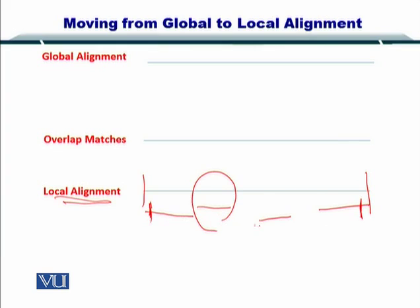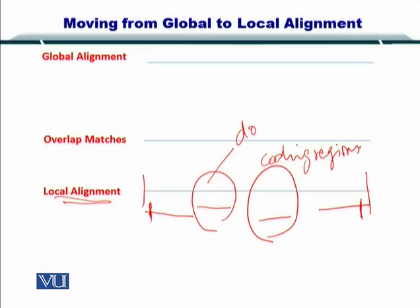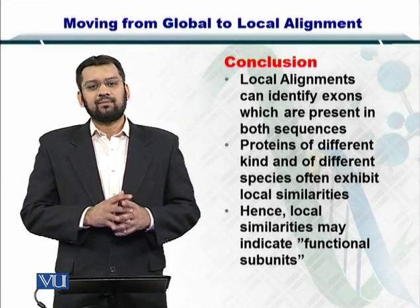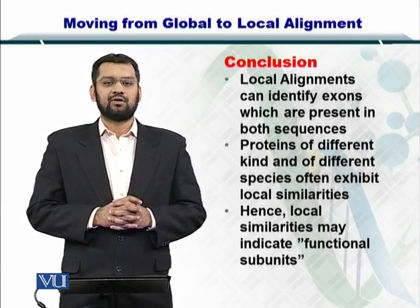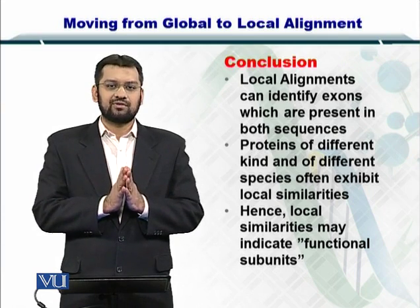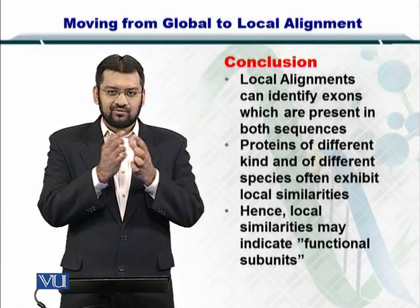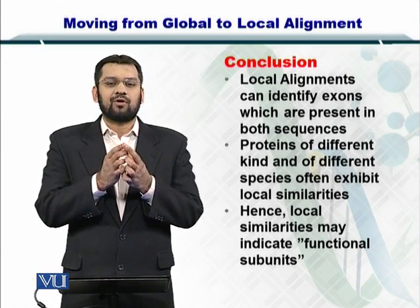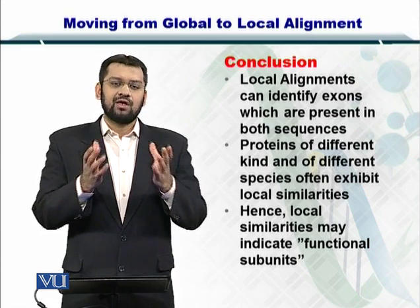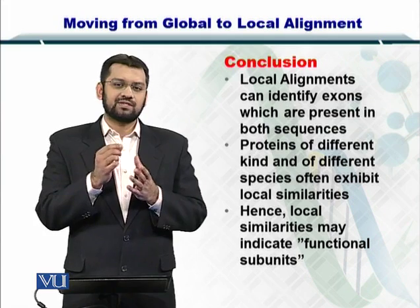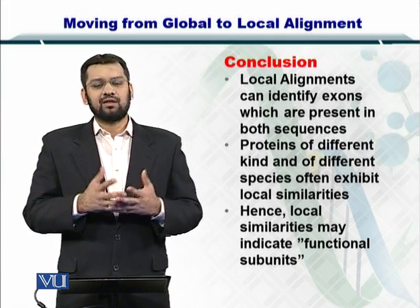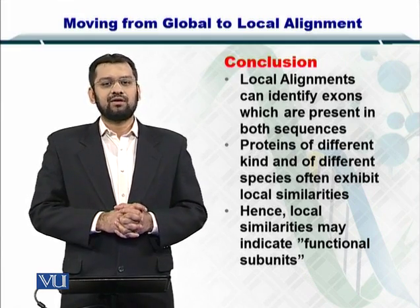In this way, the highly matching coding regions in the case of DNA, or in the case of proteins, functional domains, can be very nicely aligned. In conclusion, local alignments can help you find exons. If you have done a local alignment between two nucleotide sequences and there are portions matching very nicely, then they may be coming from an exon. Similarly, for proteins, if portions of two protein sequences are matching very nicely, then they can be said to be part of a functional domain that is conserved in the two sequences.